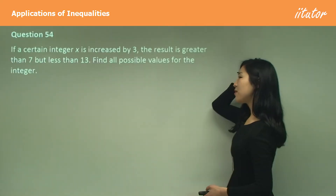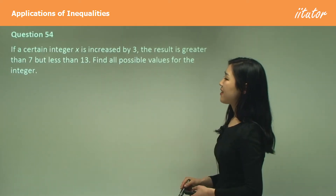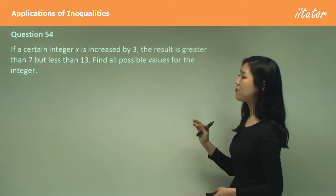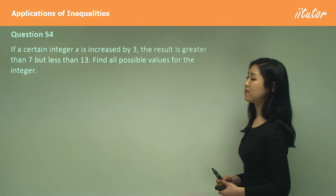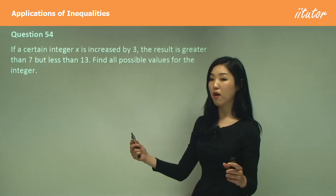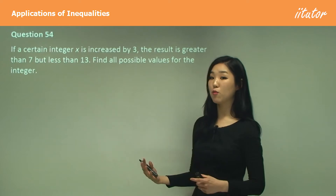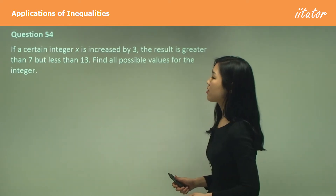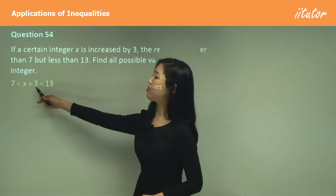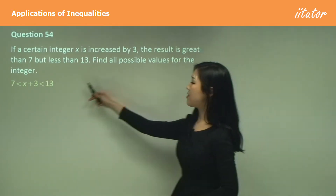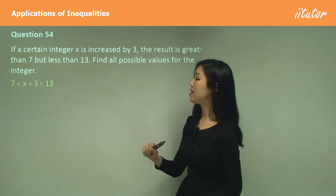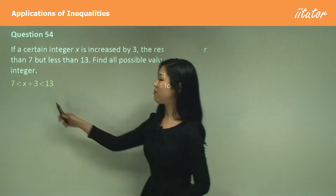Question 54: if a certain integer x is increased by 3, the result is greater than 7 but less than 13 — find the possible values for the integer. Interpret that information algebraically: x plus 3 is greater than 7 but less than 13.